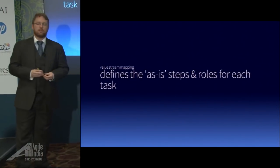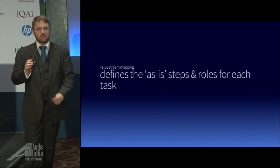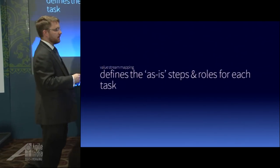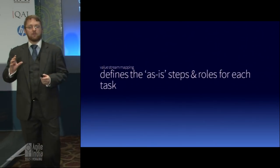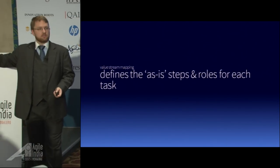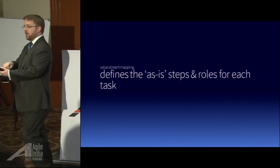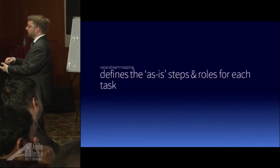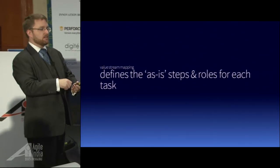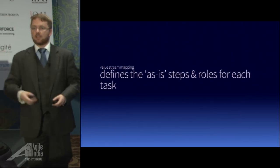So what exactly are we doing for a value stream map? The key word here is 'as is.' We are not defining an ideal state — we're not defining what we want the process to be. We're defining what the process is right now. There's a term when you're doing a value stream map called 'walk the shop floor.' It comes from manufacturing, where you would take the first piece at the start and literally walk the shop floor, following this widget step by step as it was touched — who touched it, how long was it touched for, what did they do to it — until those raw components came out at the end as a car or whatever you're building.